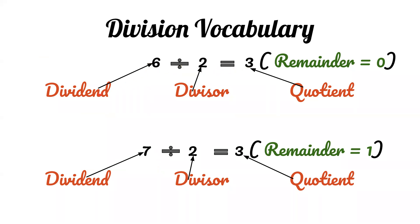6 is the dividend, 2 is the divisor, and 3 is the quotient with remainder 0.